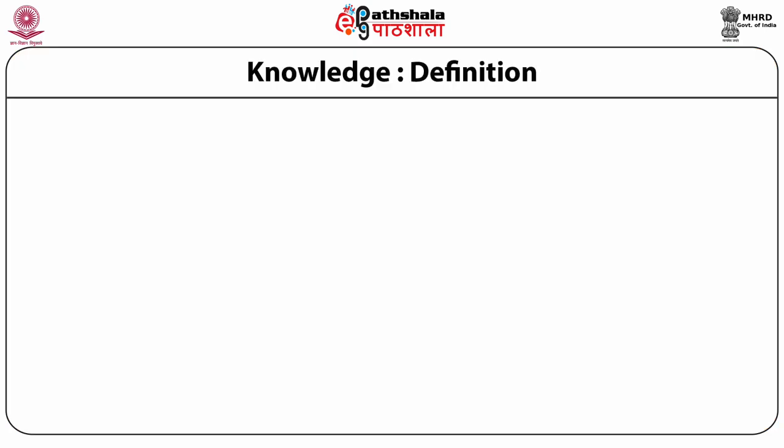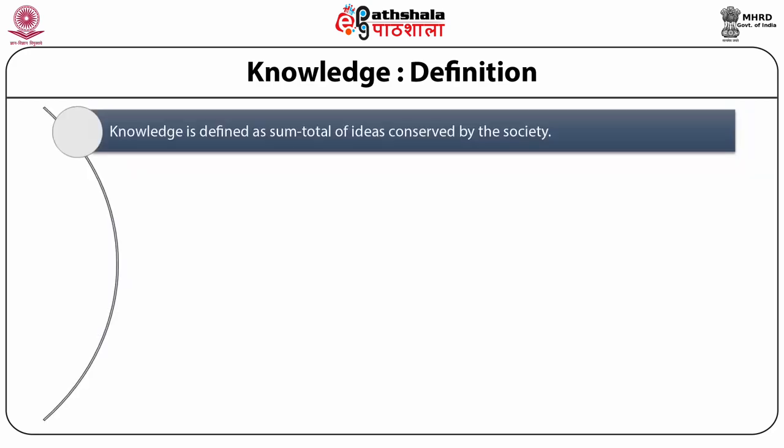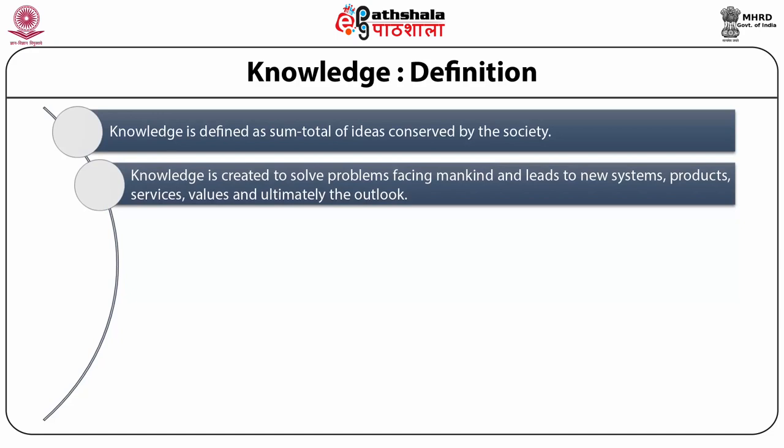What are the implications of its growth on libraries and its classification systems? Knowledge and Definition: Knowledge may have many definitions, both philosophical and operational. But from the library viewpoint, knowledge is defined as the sum total of ideas conserved by the society. Knowledge is created to solve problems facing mankind and leads to new systems, products, services, values and ultimately the outlook.